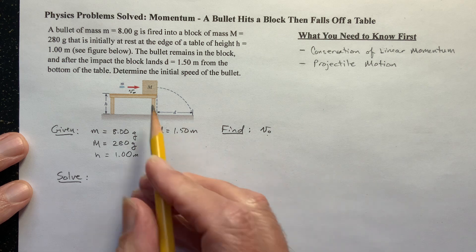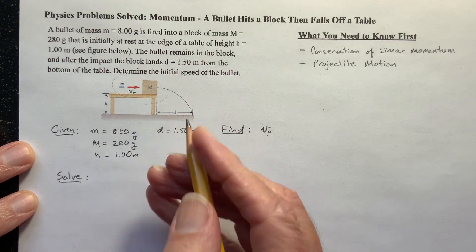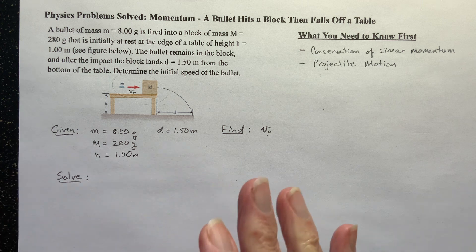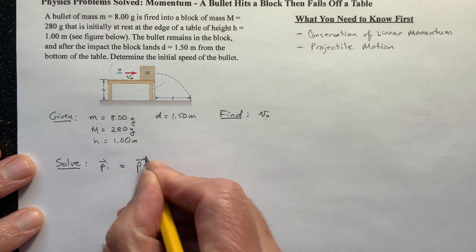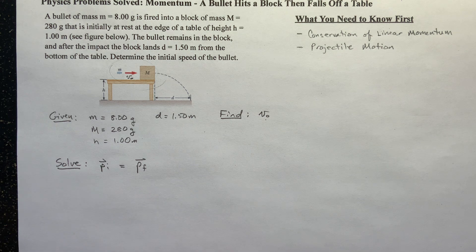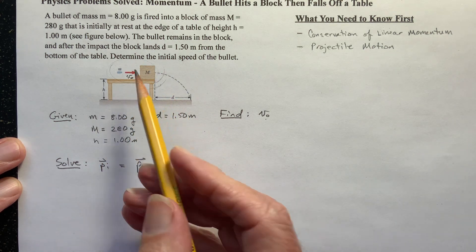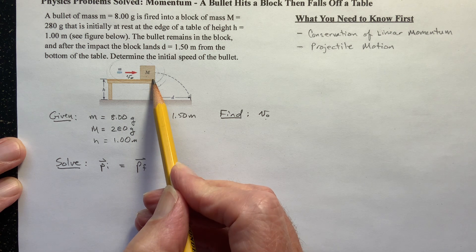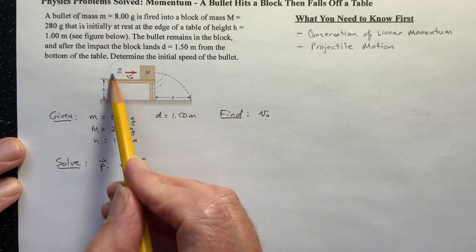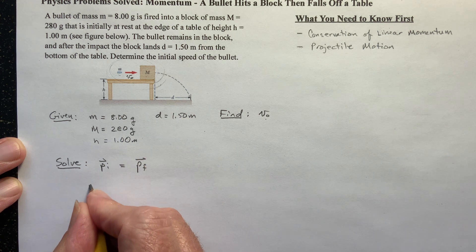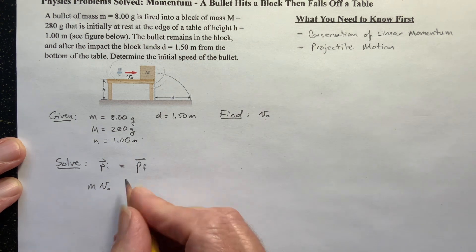Now I want to get this initial velocity of the bullet. I'm going to start off, first, this is a collision problem. The way I always start collision problems is I say the initial momentum of my system is equal to the final momentum of my system. That's conservation of momentum. During the collision, linear momentum is conserved. What is the initial momentum? The block is not moving, it has zero velocity, so it has no momentum. So all the momentum initially is contained by this moving bullet. So it's the mass of the bullet, little m, times its velocity, v0. We'll say to the right is positive.